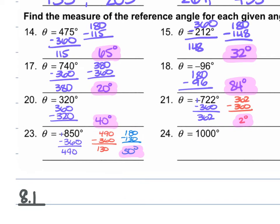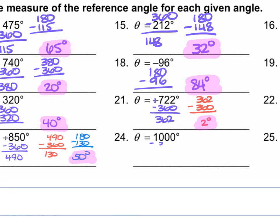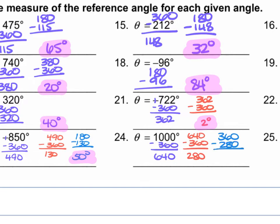For number 24, we're given 1,000 degrees. 1,000 minus 360 gives us 640. That's not less than 360, so we subtract 360 again: 640 minus 360 gives us 280 degrees. That's not what we're looking for either, so we take 360 minus 280, which gives us 80 degrees — our positive acute angle.